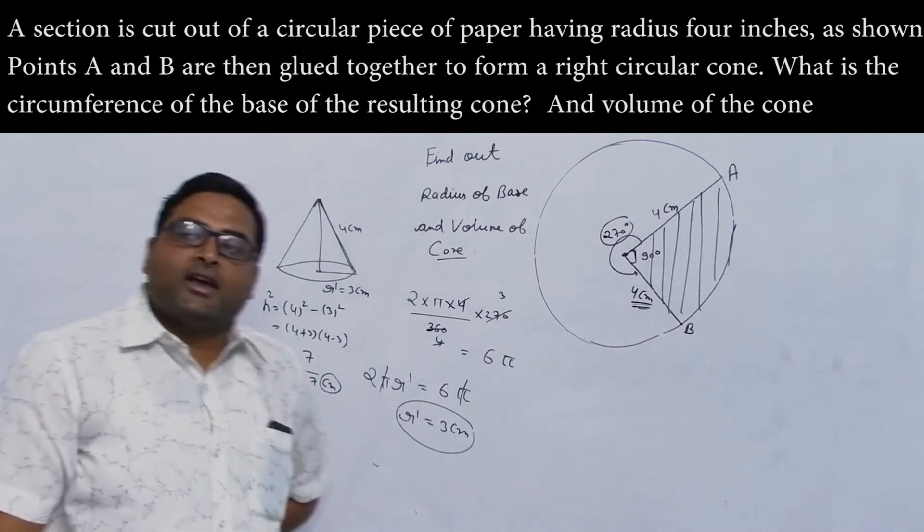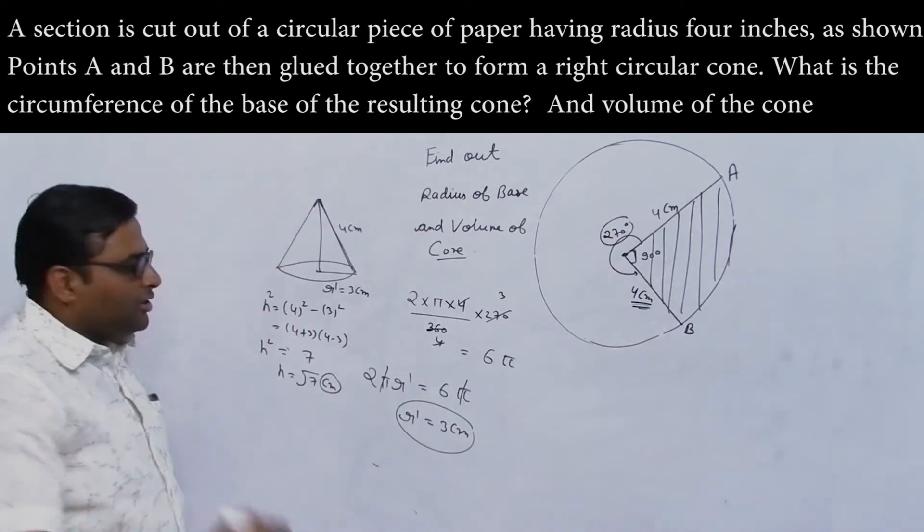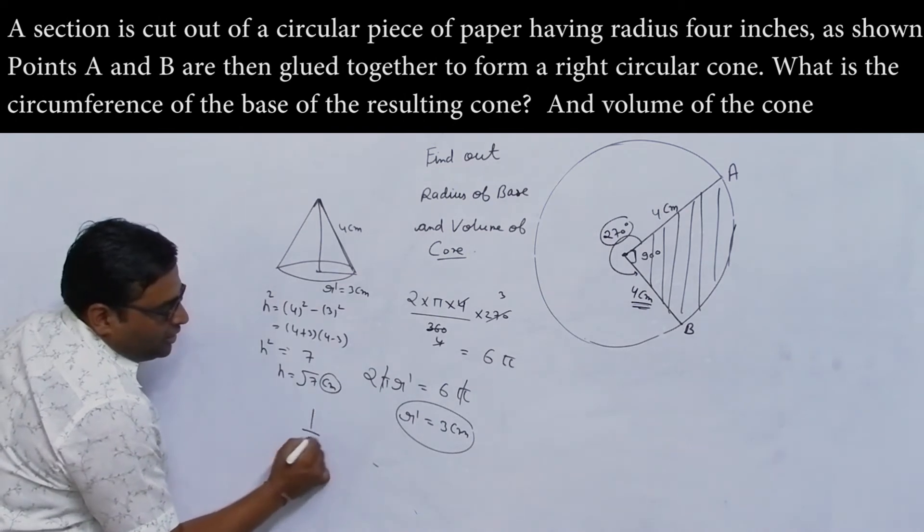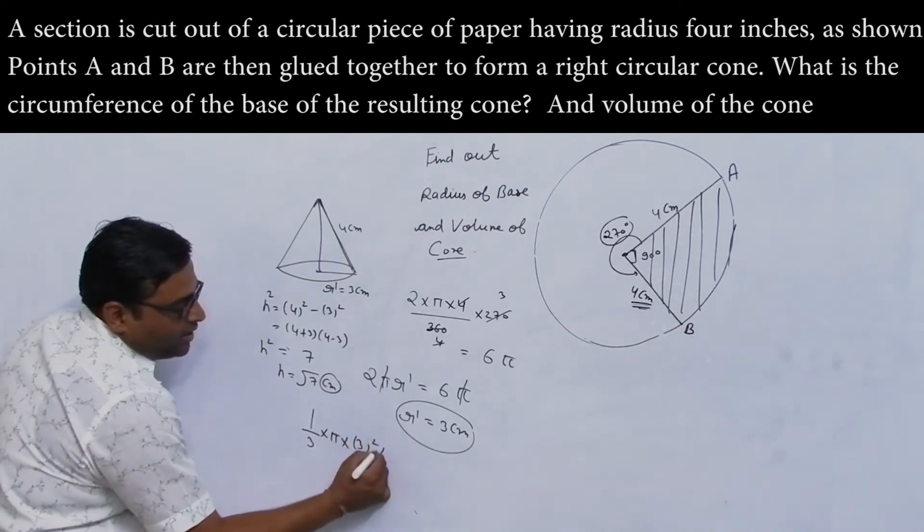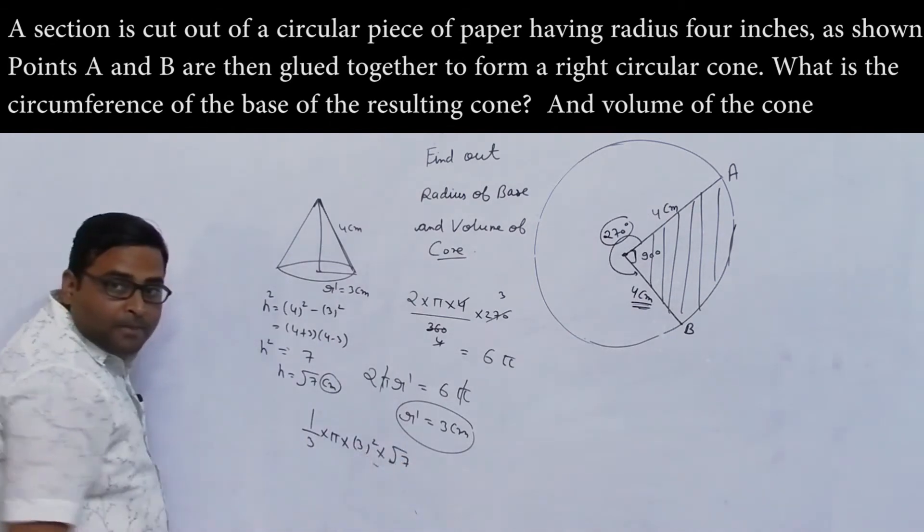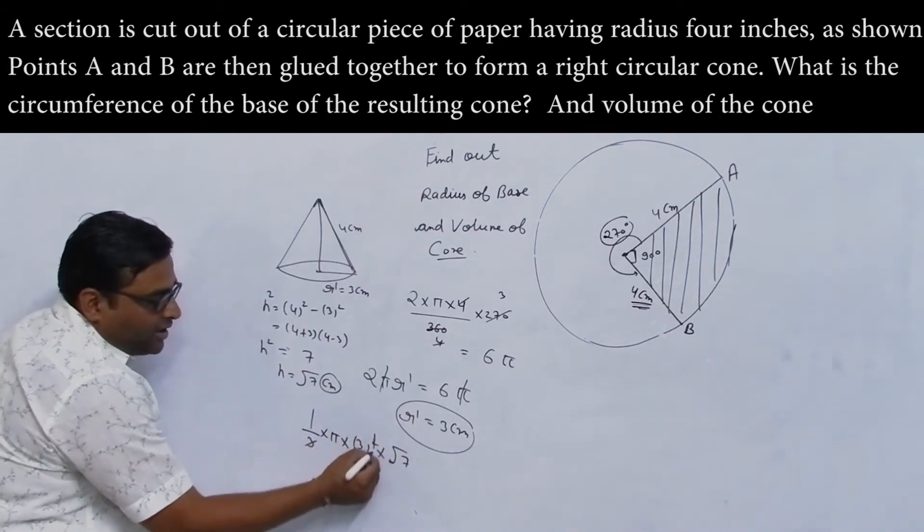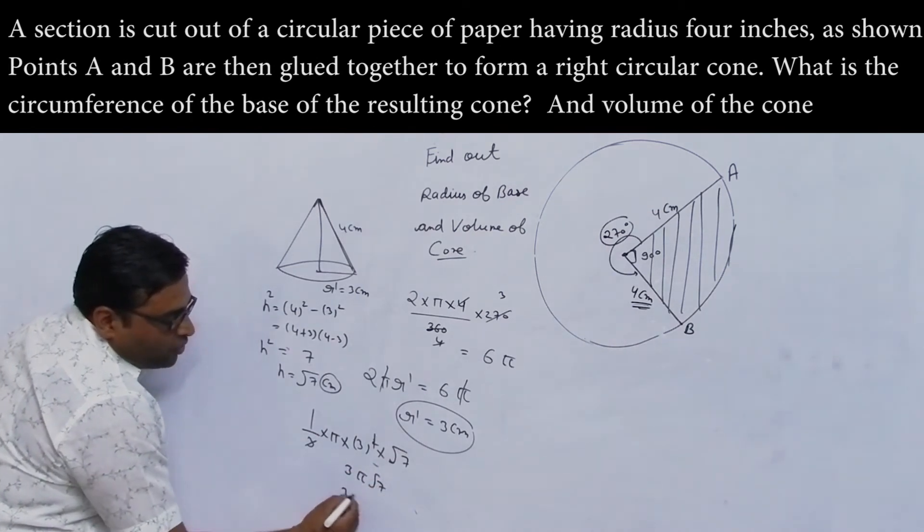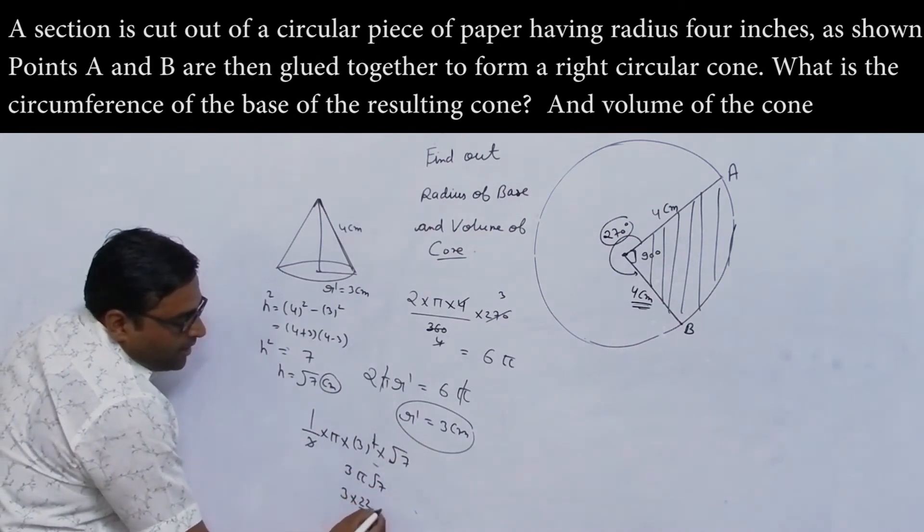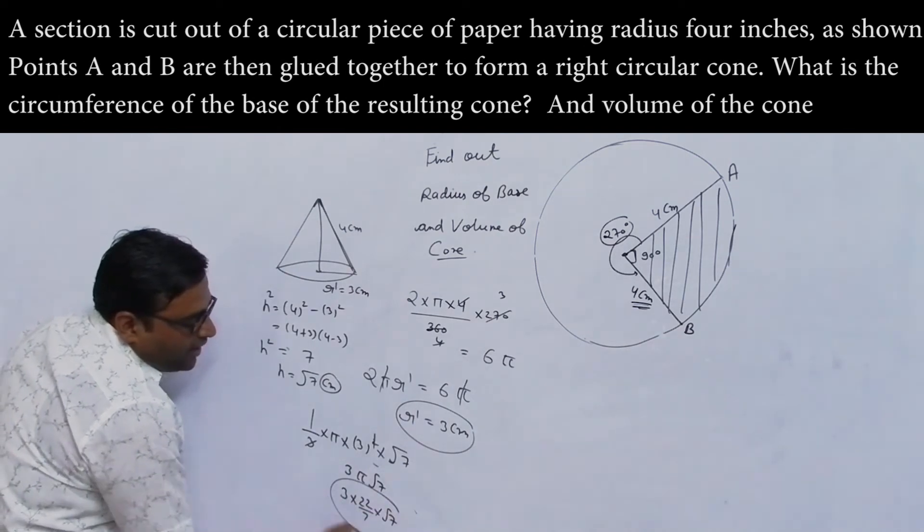Now the volume: volume is 1/3 times pi times r squared. r square is 3 squared times h, which is root 7. 3 divided by 3 cancels. Pi ki value download.